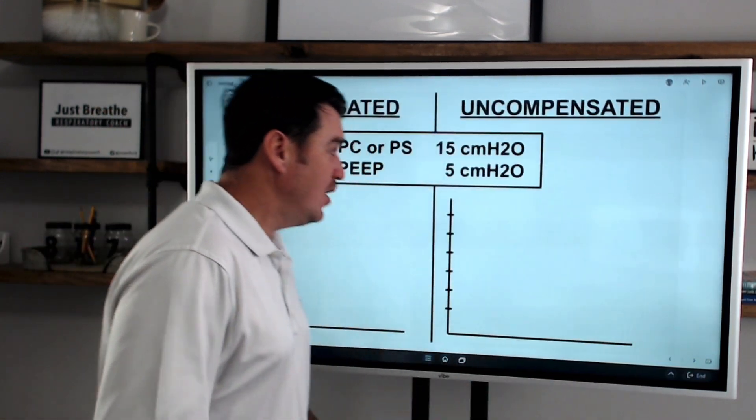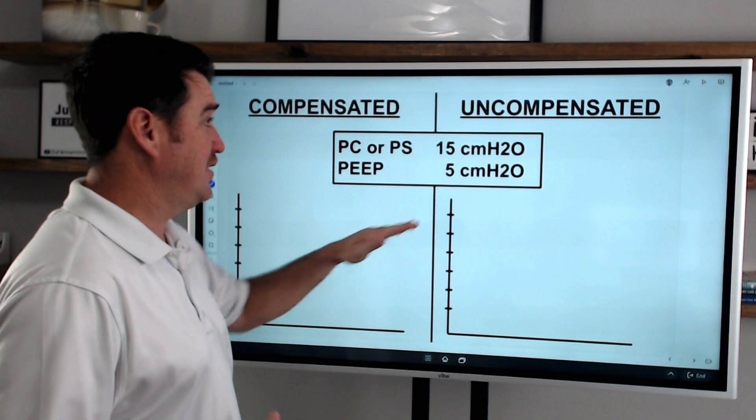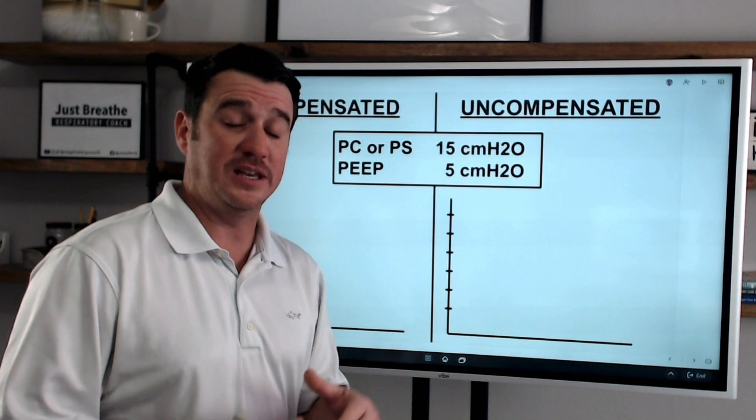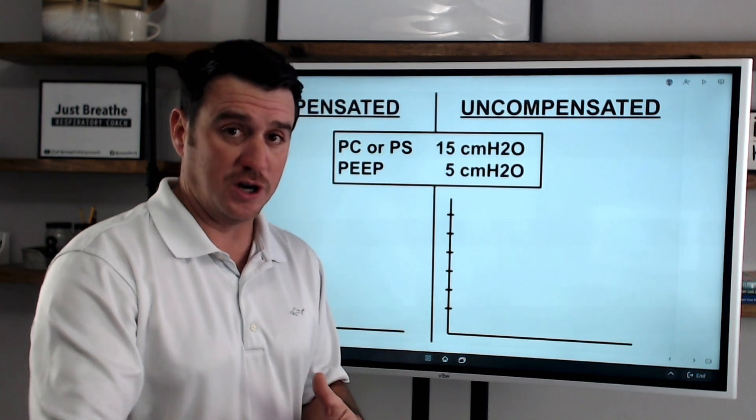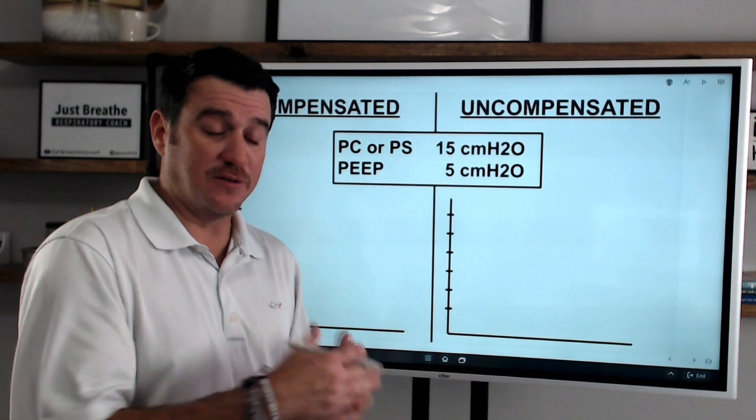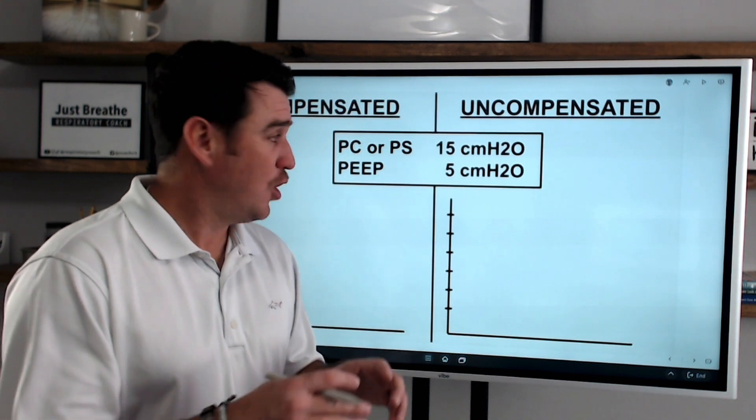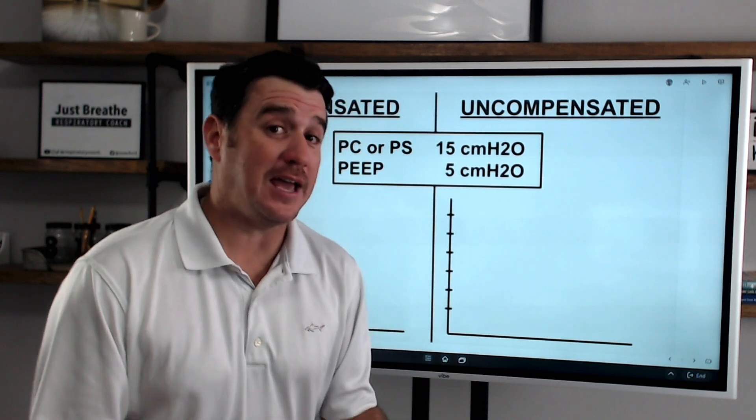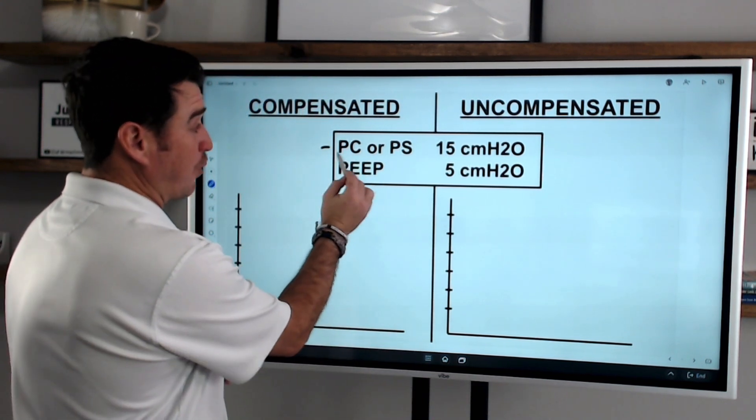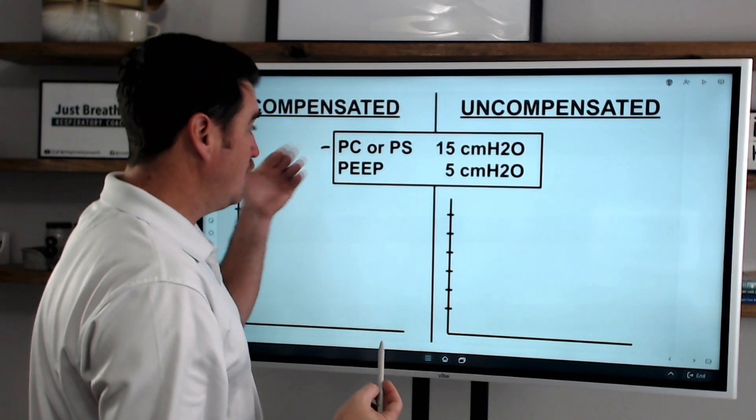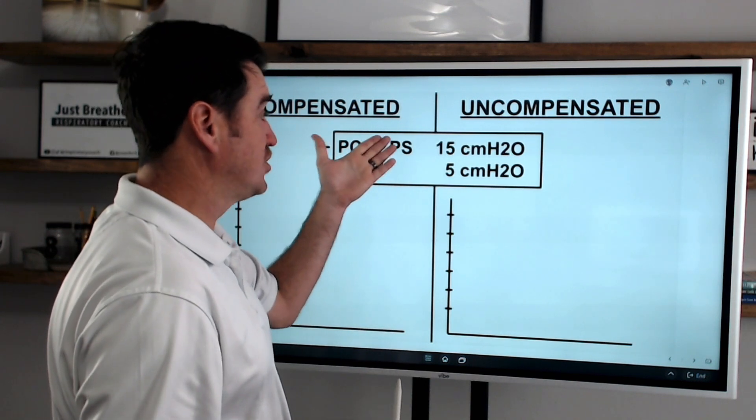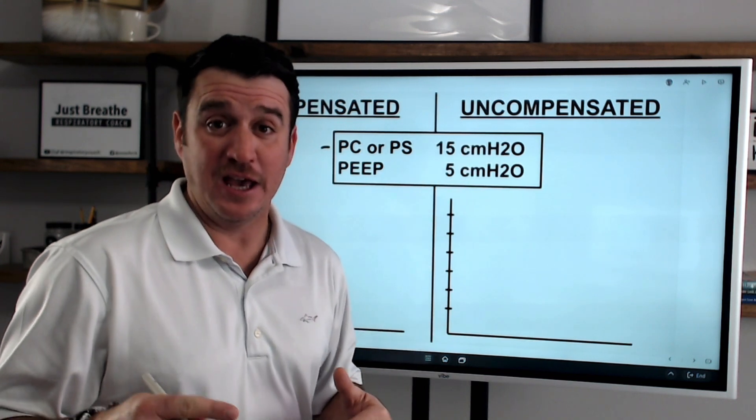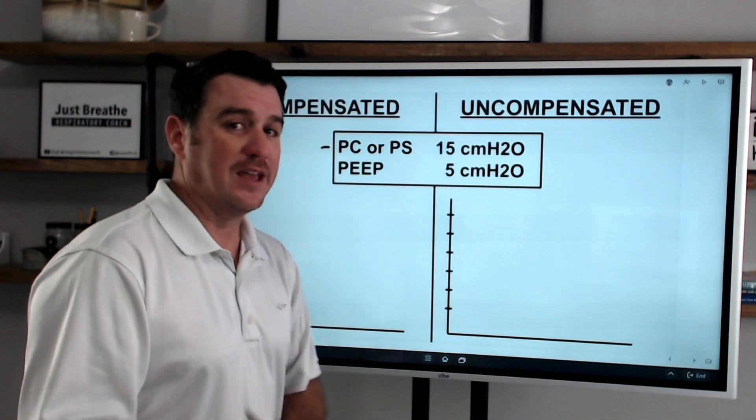Now, when you look at compensated versus uncompensated, what we're talking about is anytime we are going to be applying pressure onto a baseline, the ventilator needs to understand where it is going to stop at. So, for example, anytime we're going to dial in either a pressure control setting or if we're going to dial in a pressure support setting, then PEEP compensated versus uncompensated becomes very important. Let me show you why.